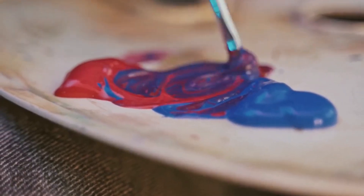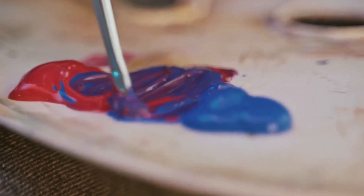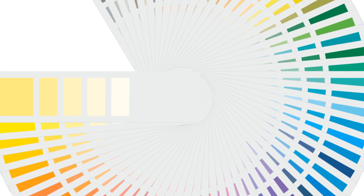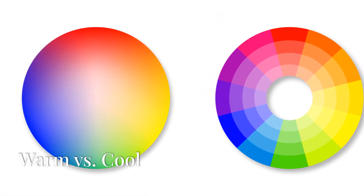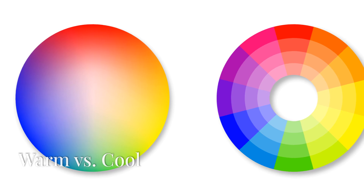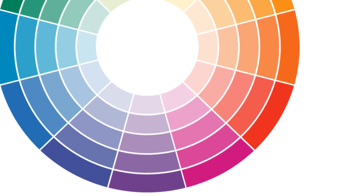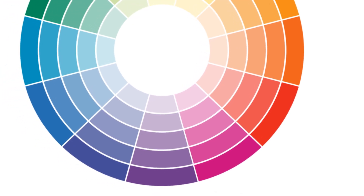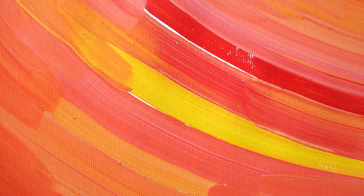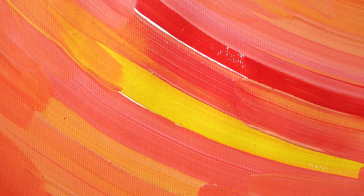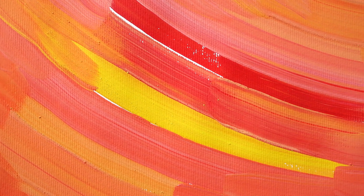Tertiary colors are made by mixing a primary color with an adjacent secondary color, like red-orange or blue-violet. Colors are also categorized as warm or cool based on their perceived temperature and psychological associations. Warm colors like red, orange, and yellow evoke warmth, energy, and passion, making objects appear closer, and are often associated with sunlight, fire, and heat.